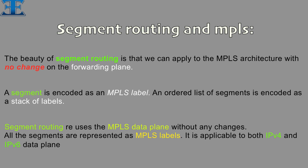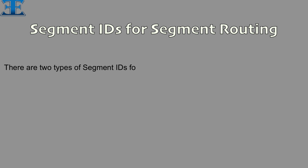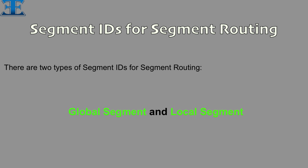Segment routing is applicable to both IPv4 and IPv6 data planes. There are two types of segment IDs for segment routing: global segment and local segment.